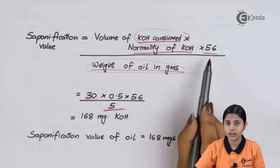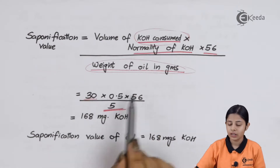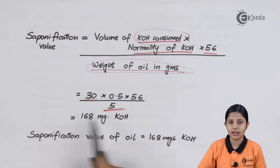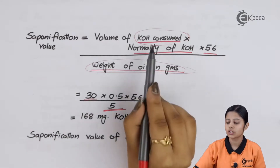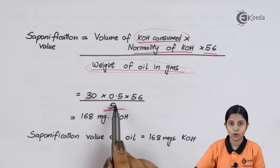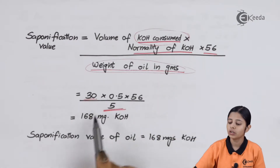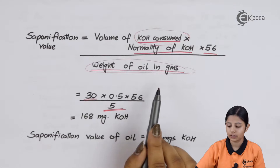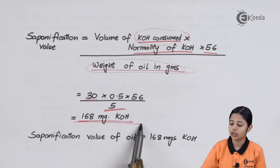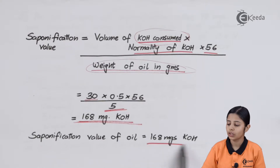The normality of KOH is 0.5 as given in the question. Calculating: (30 × 0.5 × 56) / 5 = 168 mg of KOH. This is the saponification value of the oil for Problem 1.